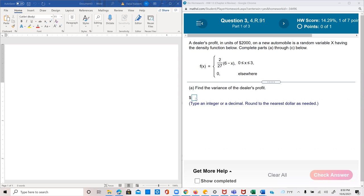So we know that variance of x equals E of x squared minus E of x whole squared.